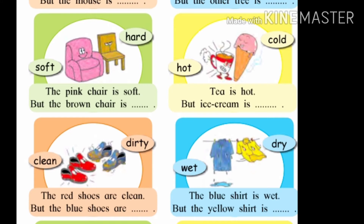Now come to the downside. In the first picture, two chairs are given — one chair is pink and second chair is brown. Two words are given: soft and hard. Soft word is near the pink chair and hard word is near the brown chair. Soft manje mau, naram. Hard manje kathin. Now complete the sentence: The pink chair is soft but the brown chair is hard. Soft and hard, both are the opposite words.